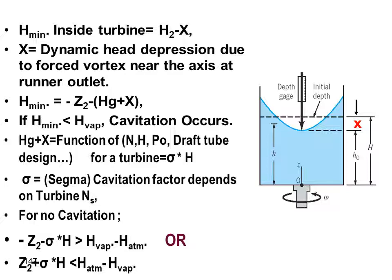Cavitation will cause damage and disturbance. The head gain (hg) and x are functions of the turbine design and type, including the turbine's speed (RPM), head, power output, and draft tube design — such as the angle of divergence and area ratio. We can express hg plus x as a function of the turbine head H.